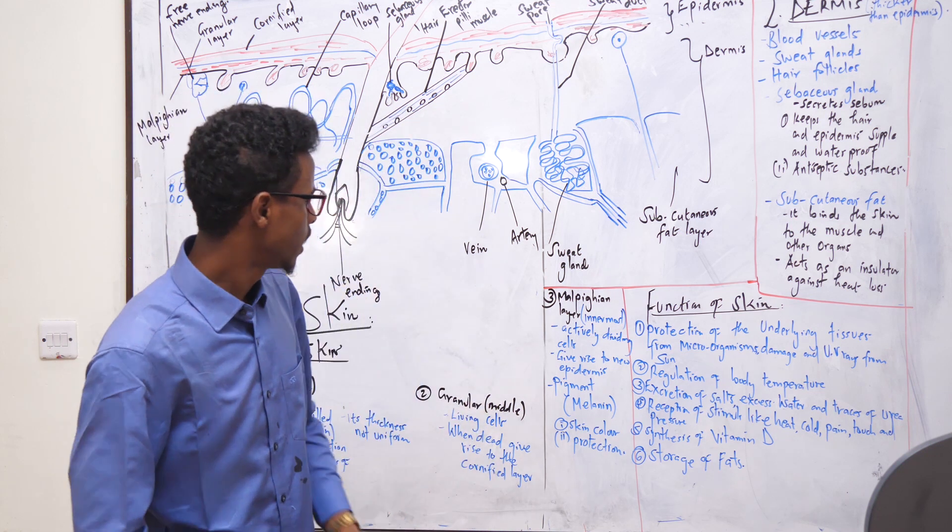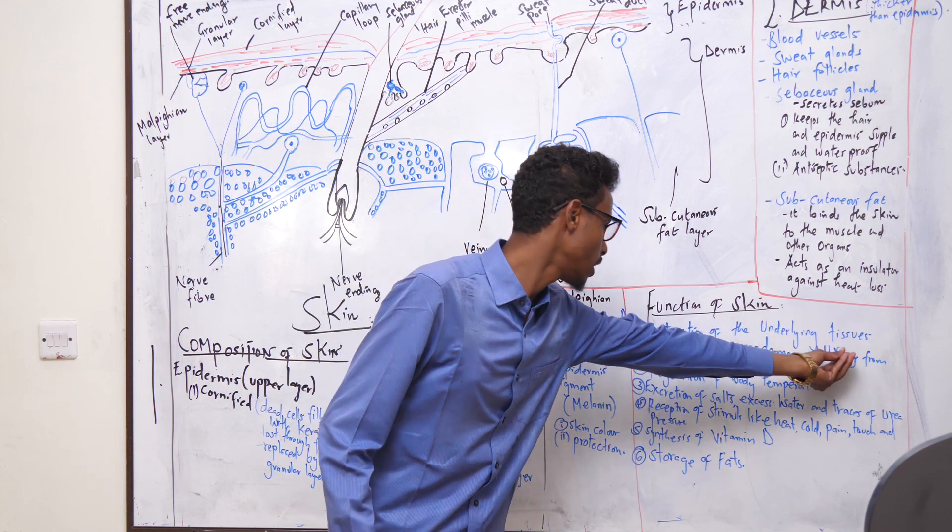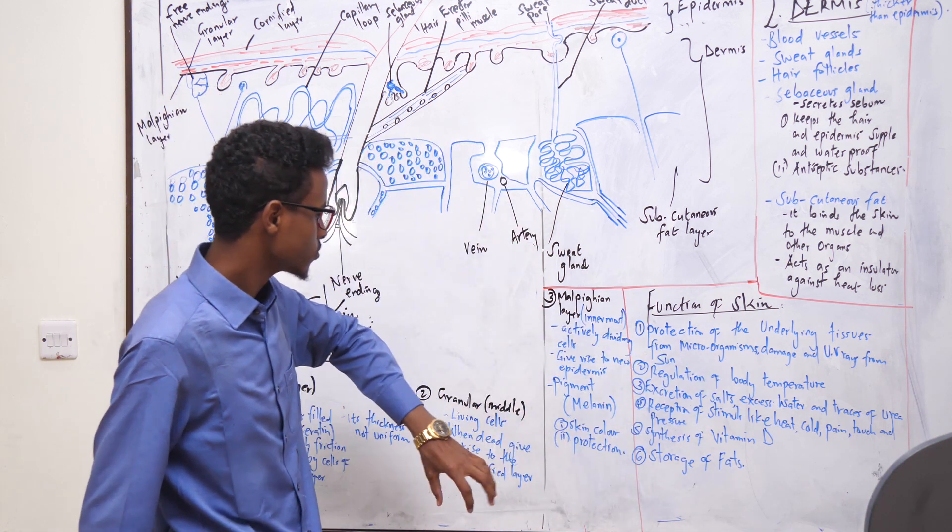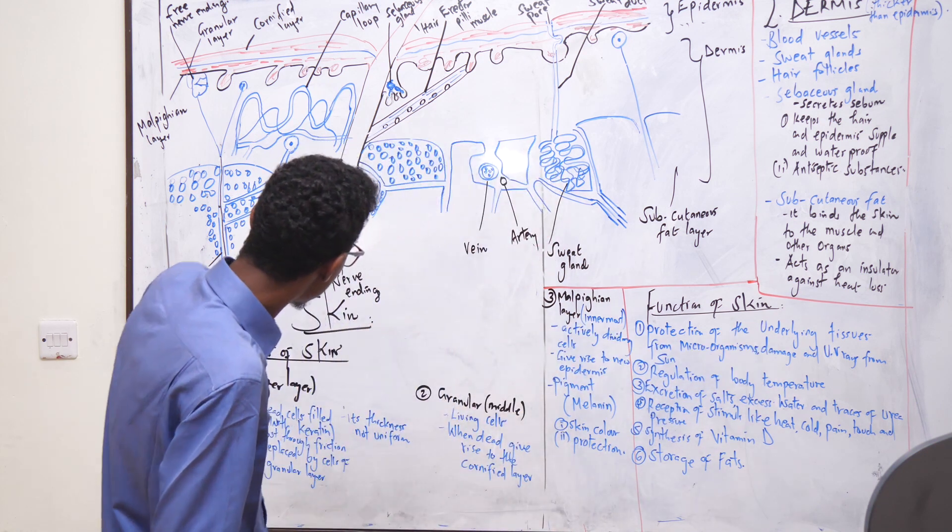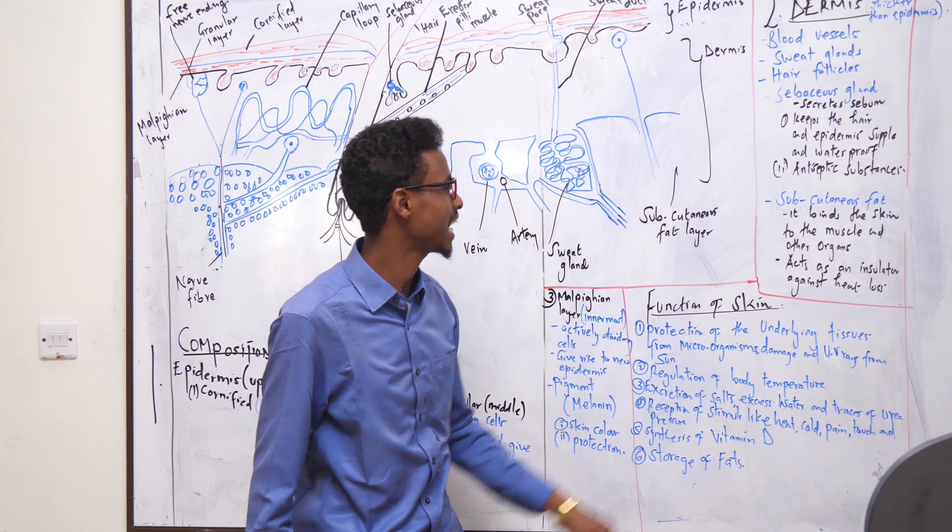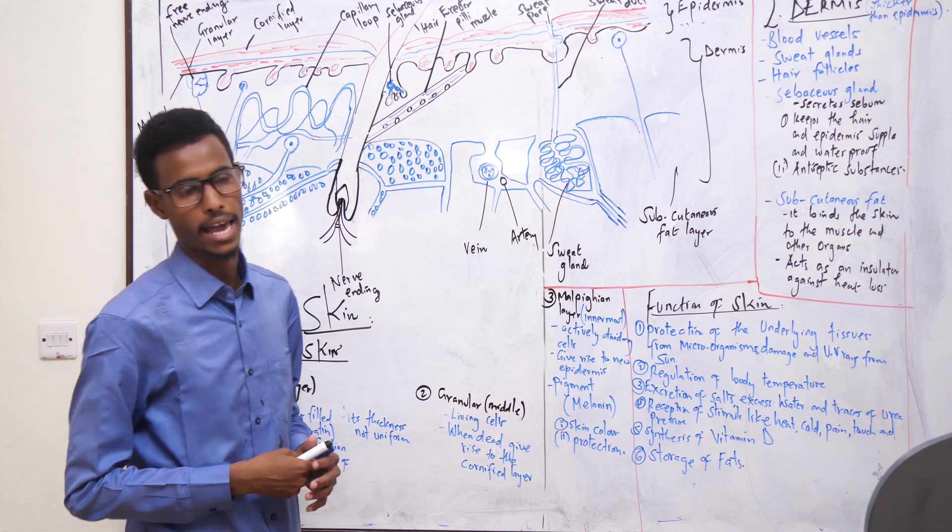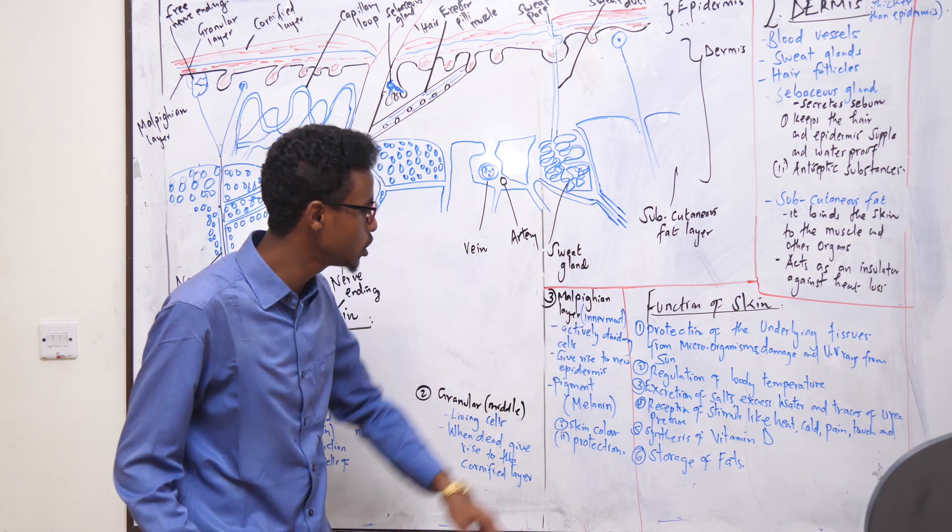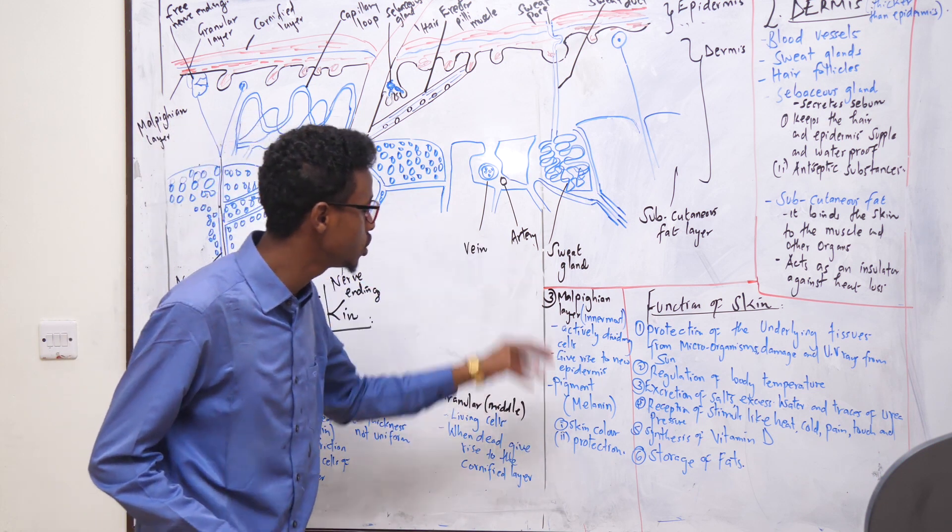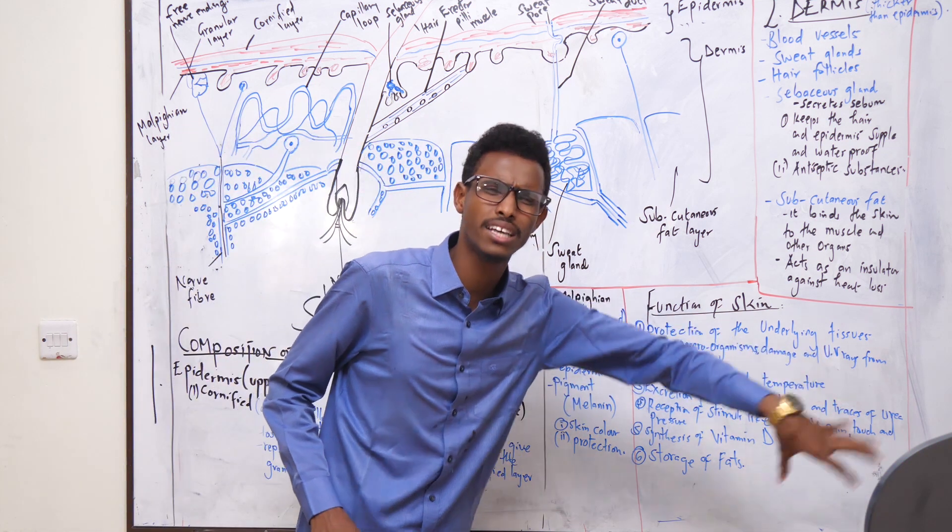Let's come to the functions of the skin. Protection of the underlying tissues from microorganisms, damage, and UV rays from the sun. Protection from microorganisms, mechanical damage - those functions come from the cornified layer of the epidermis. The sebaceous gland also does some protection from microorganisms. What about the UV rays from the sun? That function is primarily played by the melanin of the malpighian layer found in the epidermis.